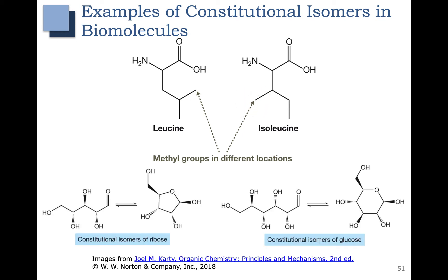There are also some great examples of constitutional isomers in sugars. For example, ribose, shown here on the left in its open chain form, can cyclize. These molecules have the same number of carbons, hydrogens, and oxygens, so they are constitutional isomers. Glucose, shown over here, can also cyclize. Again, these have the same numbers of carbons, oxygens, and hydrogens, and because they have different connectivity, they are considered to be constitutional isomers.